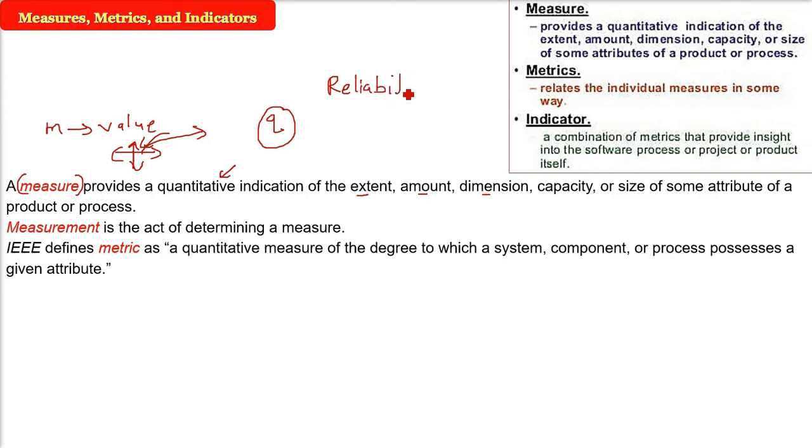For example, take the example of reliability. Now this is an attribute of any product or software. So the quantitative measure of the degree to which the system—just understand we are talking about a system or component or process—what is the quantitative measure of the degree to which this attribute is present in that component.